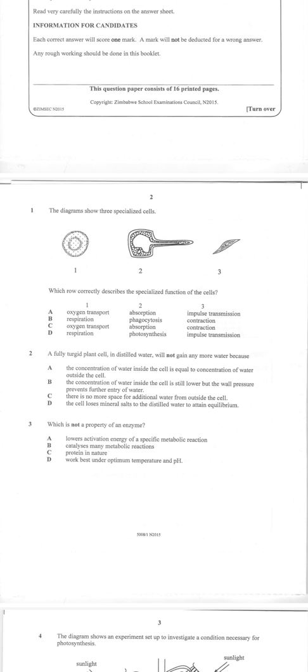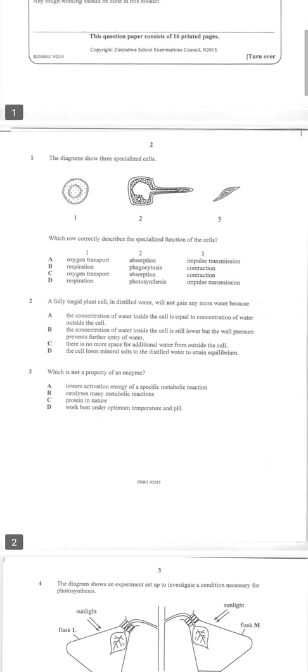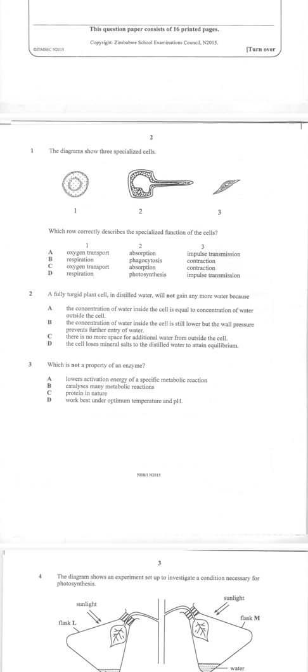Red blood cells are for oxygen transport, root hair cells are for absorption of water and mineral salts, and the muscle cell is for contraction. So the correct answer becomes C.